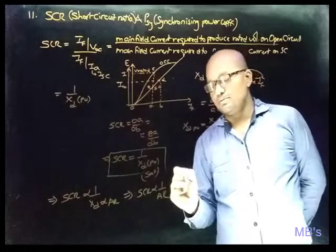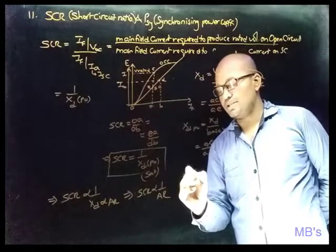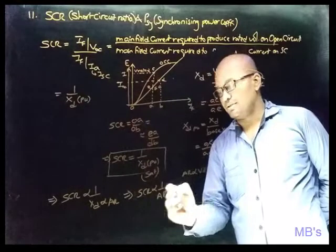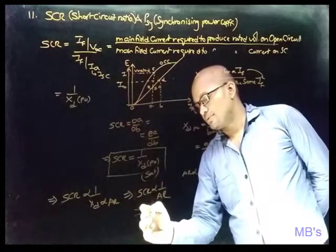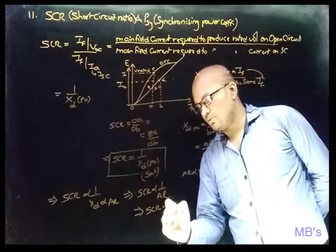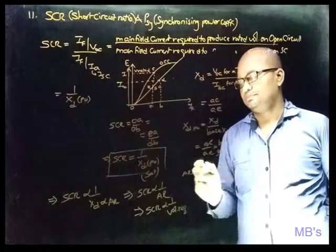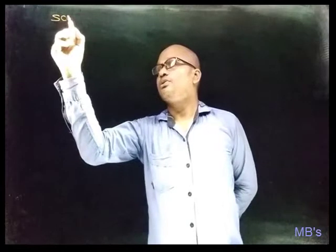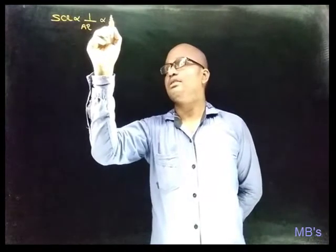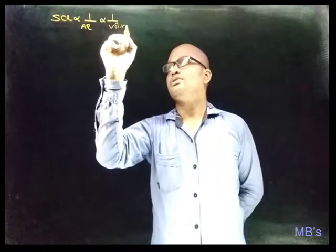Armature reaction is directly proportional to voltage regulation, which implies SCR is also inversely proportional to voltage regulation. In summary, short circuit ratio is inversely proportional to both armature reaction and voltage regulation.